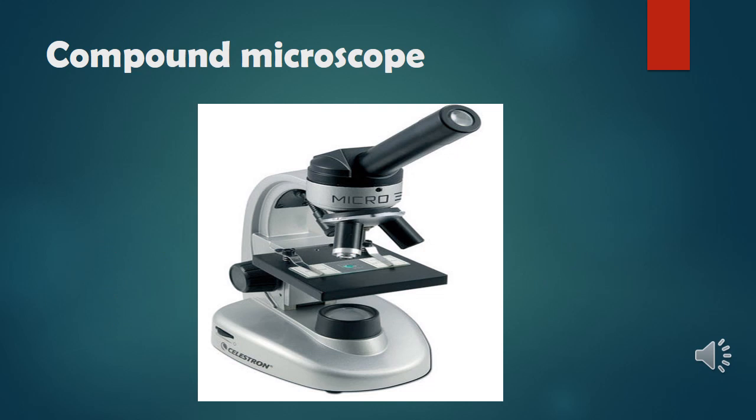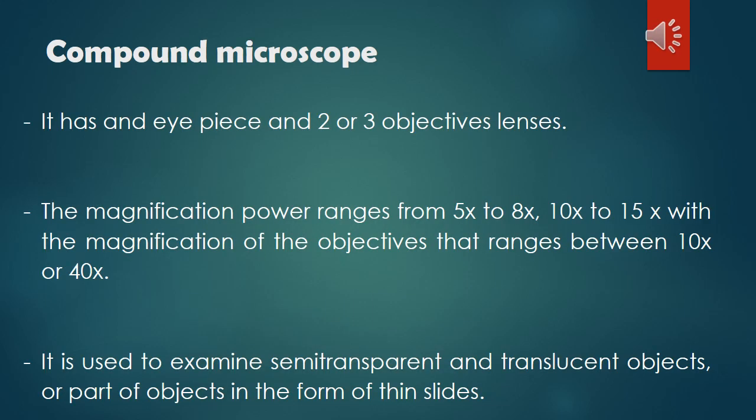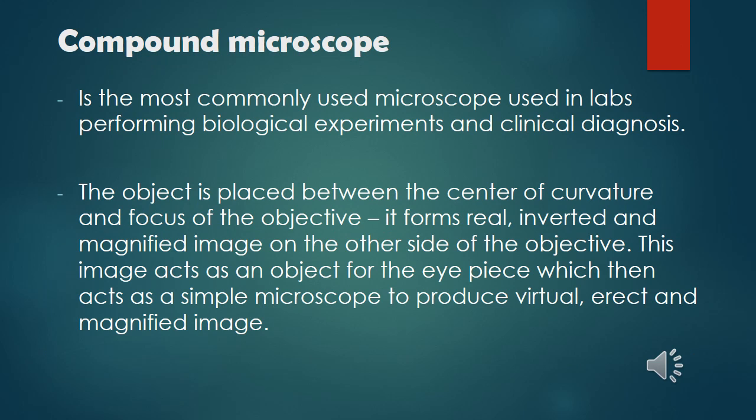The Compound Microscope has an eyepiece and two or three objective lenses. The magnification power of the eyepiece ranges from 5x to 8x or 10x to 15x, with the magnification of the objectives ranging between 10x to 40x. It is used to examine semi-transparent and translucent objects or parts of objects in the form of thin slides. This is the most commonly used microscope in labs performing biological experiments and clinical diagnosis. The object is placed between the center of curvature and focus of the objective.